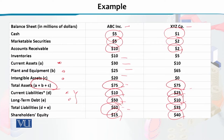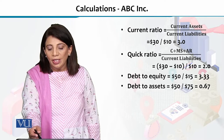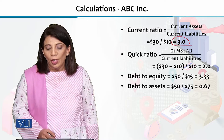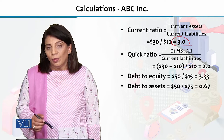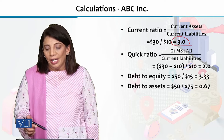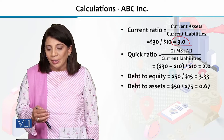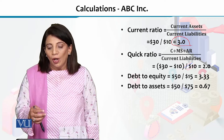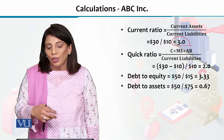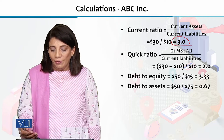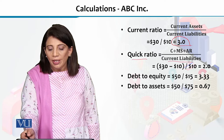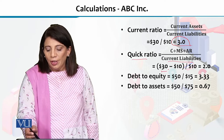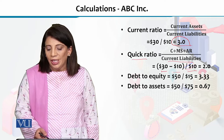Now let's calculate the ratios using this data. For ABC Incorporation, the current ratio is current assets divided by current liabilities, which is $30 million divided by $10 million, giving a current ratio of 3. This means ABC has the capacity to pay its liabilities — if this value is greater than one, it means current assets exceed liabilities and you have sufficient assets to meet your obligations. For the quick ratio, we take current assets minus inventories divided by current liabilities, which gives $30 million minus $10 million divided by $10 million, resulting in a quick ratio of 2.0.